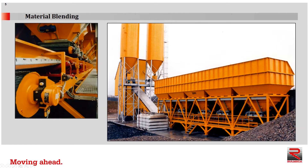Here's an example of hoppers used for material blending. This shows a five pant leg configuration in which each pant leg contains a different ingredient — for example, a large gravel, a smaller size of gravel, sand, and so forth. Each pant leg has a hopper feeder conveyor at the bottom of it. Each hopper feeder conveyor has a drive, and the main collecting conveyor has a conveyor drive.